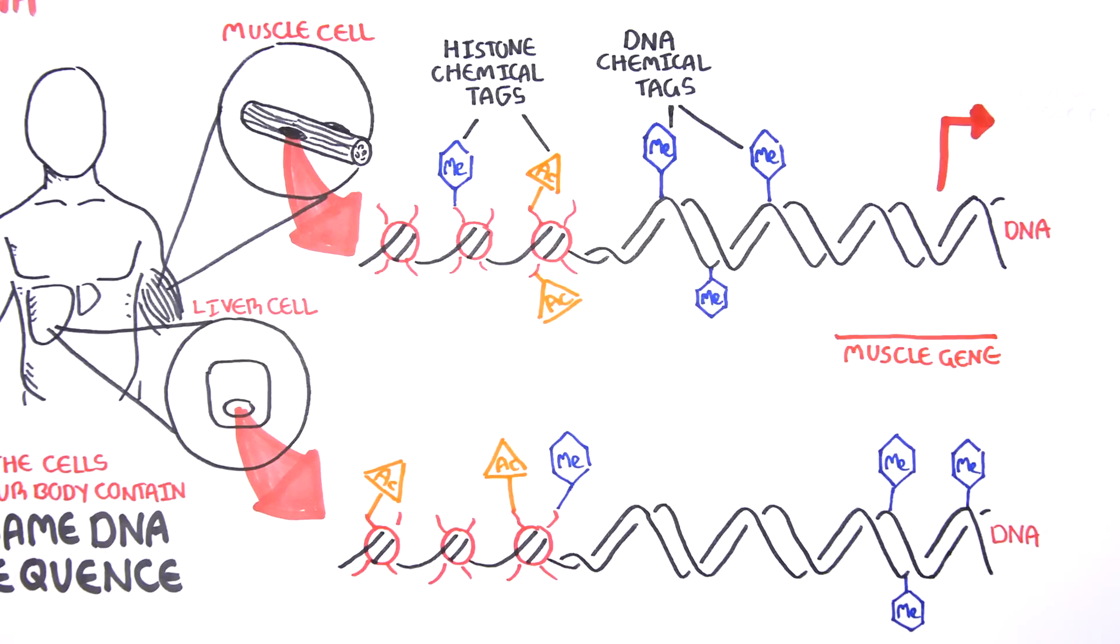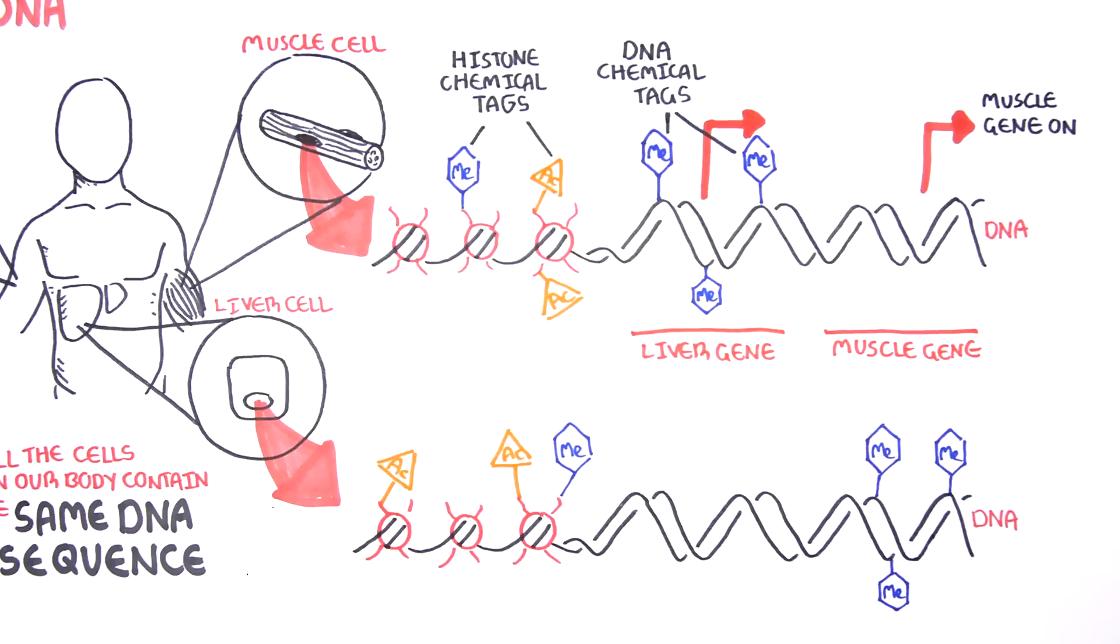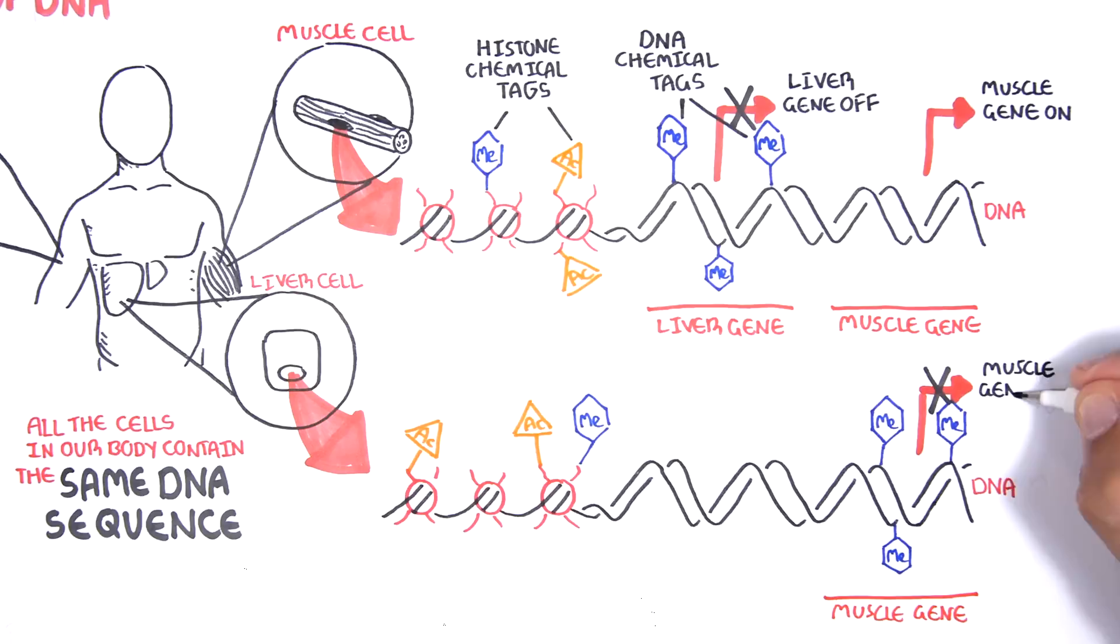For example, muscle cells will have genes turned on that a muscle cell requires, and will turn off genes that a liver cell requires. Similarly, the liver cell will have genes for muscles turned off, and genes that a liver requires turned on.